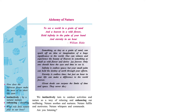First of all, let us know the meaning of 'alchemy.' Alchemy means miracles — something which is magical. The first four lines in the lesson are written by the poet William Blake. William Blake is also a great poet, and he is telling us about nature. Let us check what he says, and the meaning is given below.